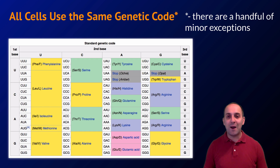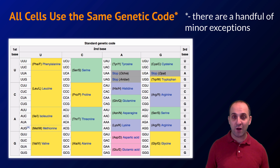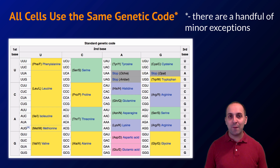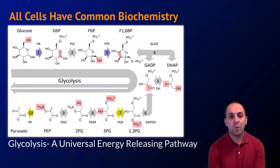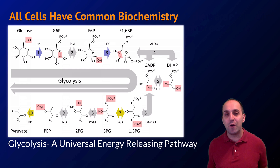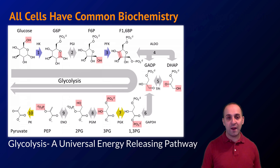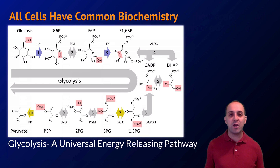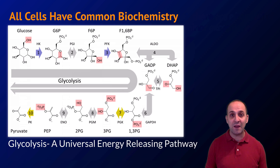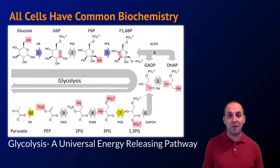I'm honor-bound to point out that there are a handful of minor exceptions in certain types of prokaryotic cells where one codon may code for a unique amino acid, but these exceptions are incredibly minor and functionally insignificant for our discussion. Looking more in detail at the processes inside cells, we see that all cells share certain aspects of their biochemistry. The example I've chosen to spotlight is a universal energy-releasing pathway called glycolysis. Found in every cell on the planet, glycolysis takes energy stored in a sugar molecule and converts it into energy forms the cell can use — particularly molecules of ATP. All cells on the planet carry out glycolysis, which is another powerful piece of evidence for the common ancestry of every living thing.